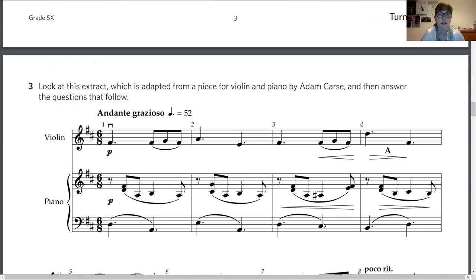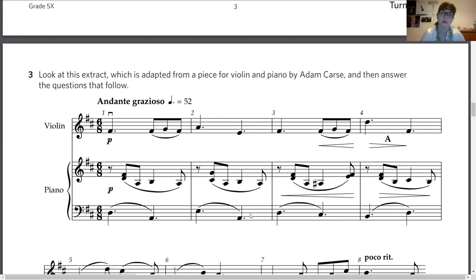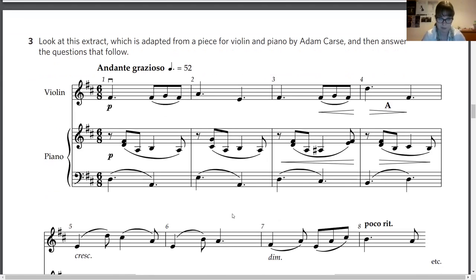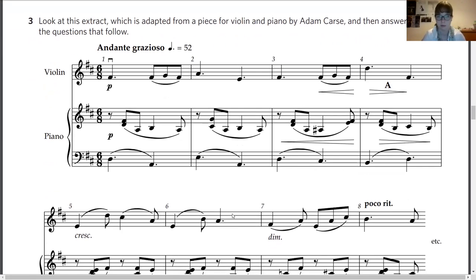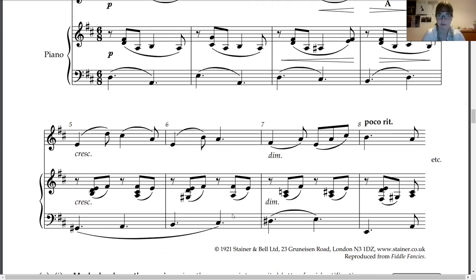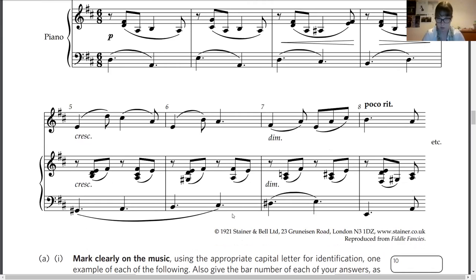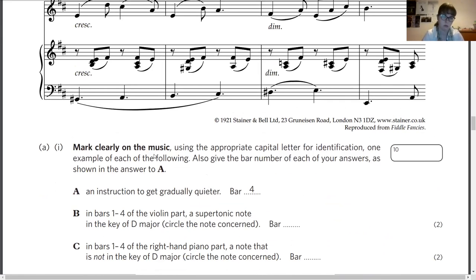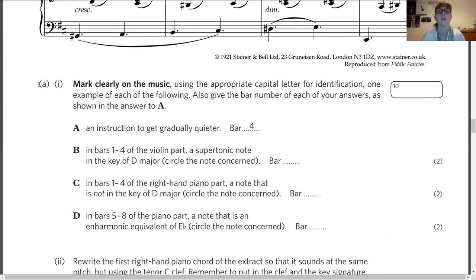Question number three: Look at this extract, which is adapted from a piece for violin and piano by Adam Kass, and then answer the questions that follow. Just things to watch out for: look out for your instruments if you're just reading from left to right, because music's always printed in a very methodical way. Instruments, clefs, key signatures, time signatures, tempo markings, dynamics, and phrase marks. If you have a bit of paper to spare, you could always just write down, and one way to do that might be to just write each bar number and then next to that bar number write what you find in that bar, just to help you get really familiar with this extract. But of course look at the questions first so you're not just doing that for the sake of it.